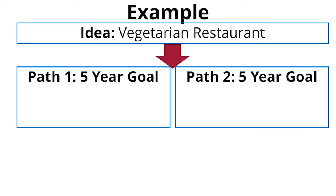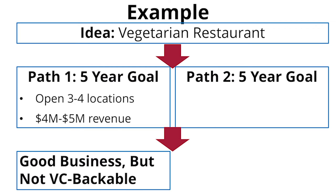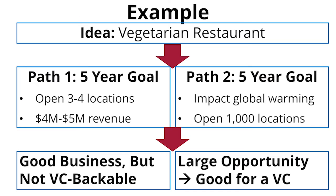Imagine you are doing a vegetarian restaurant in Cambridge. One view would be that five years from now you might have three or four branches, and the business might be four or five million dollars — it's a good business, but that's not a good business for a venture capitalist. A different version of a very similar business would be: I set up a vegetarian restaurant, I have great food, but my aim is to change the trajectory of global warming, and I'm going to create a thousand units of this within five years. That is a business that's interesting for a venture capital firm.